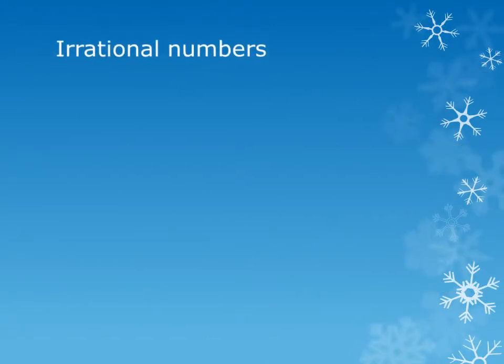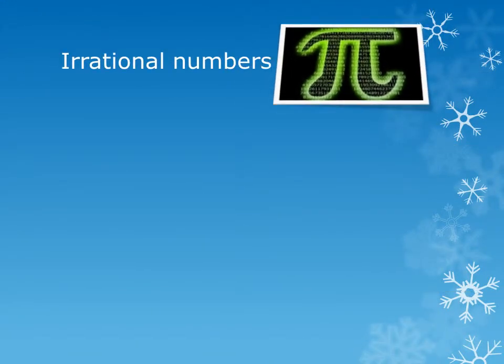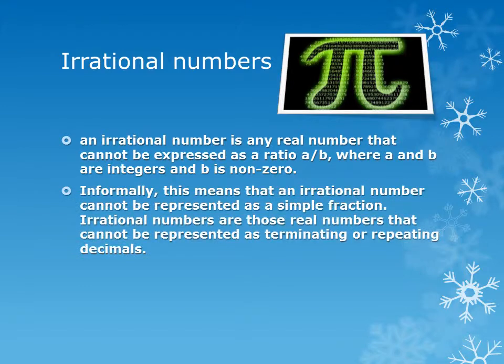Irrational Numbers. An irrational number is any real number that cannot be expressed as a ratio a/b, where a and b are integers and b is non-zero. Informally, this means that an irrational number cannot be represented as a simple fraction. Irrational numbers are those real numbers that cannot be represented as terminating or repeating decimals.